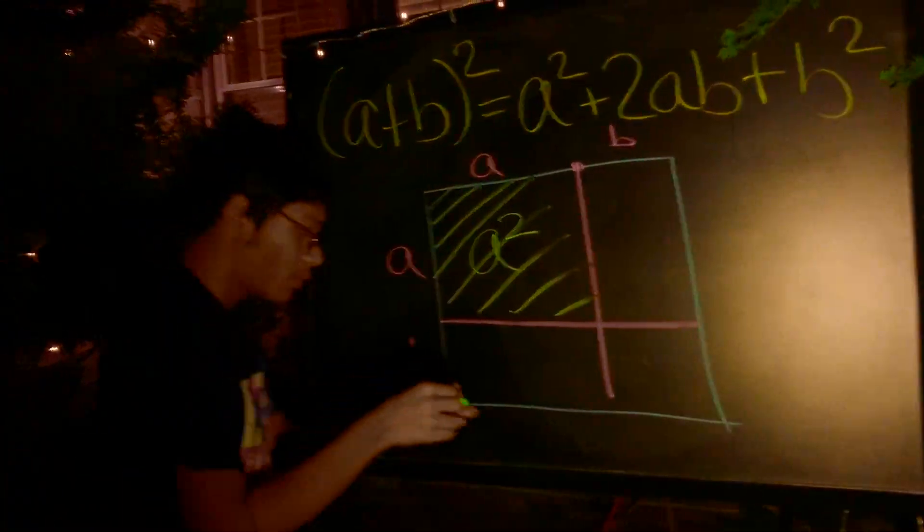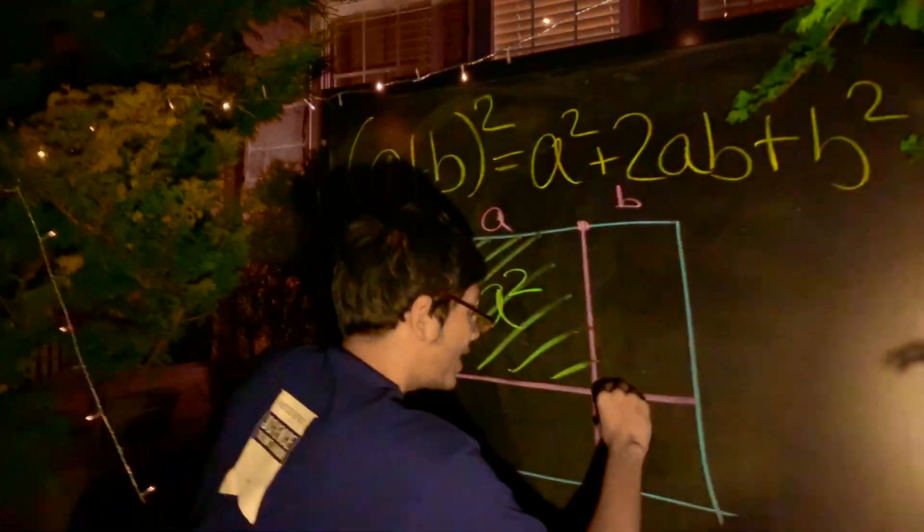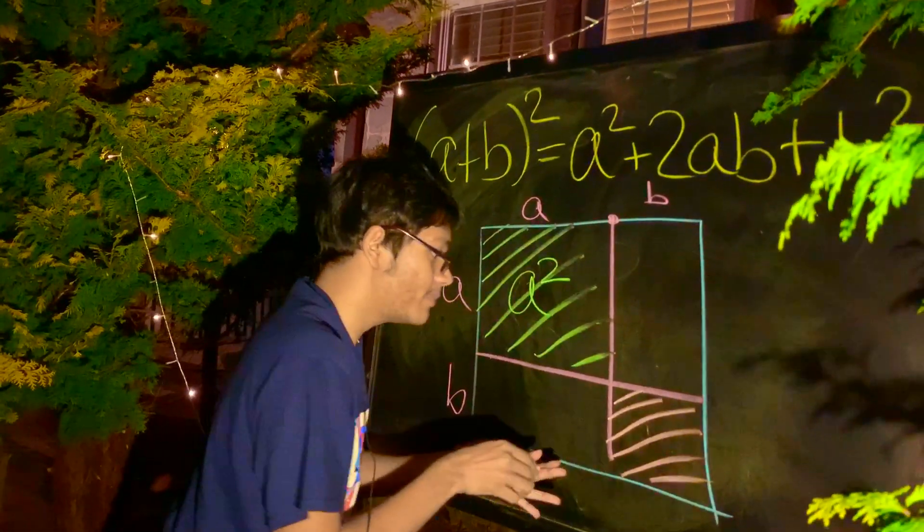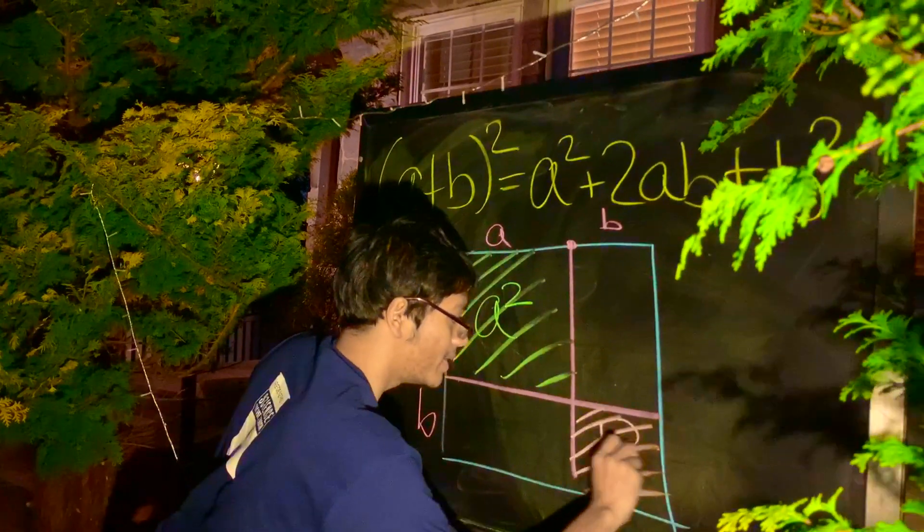But what about this rectangle? Well, B times B, what's B times B? Well, hopefully you recall that the product of B times B would just be B squared.